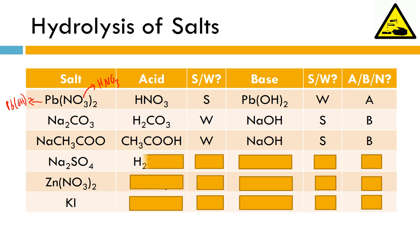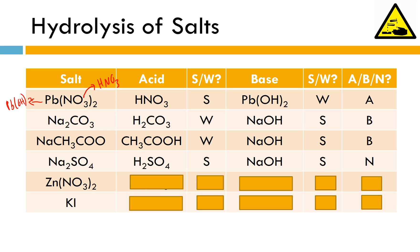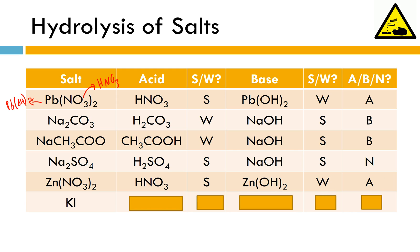Sodium sulfate: sulfuric acid must be the acid, which is strong, and sodium hydroxide is our base, also strong. So strong plus strong gives us a neutral salt — when dissolved in water, like sodium chloride, we'll see no real change in pH. Zinc nitrate: HNO₃ is our strong acid, zinc hydroxide is a weak base, so we'll have an acidic salt. This will cause the pH to drop when dissolved in water.